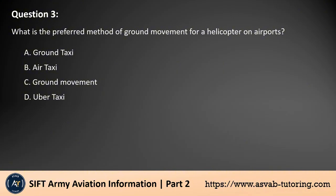Question 3. What is the preferred method of ground movement for a helicopter on airports? A. Ground taxi. B. Air taxi. C. Ground movement. D. Uber taxi. The answer is B. The preferred method of ground movement for a helicopter at airports is air taxi. Air taxiing involves flying at a low altitude, usually below 100 feet, while maintaining a slow speed, allowing the helicopter to efficiently and safely navigate around the airport. Ground taxiing involves moving on the ground, but air taxiing is faster and more common for helicopters.